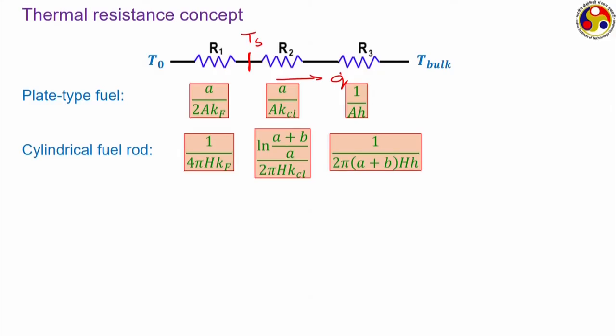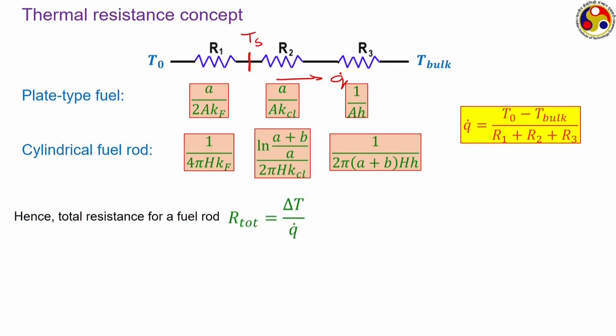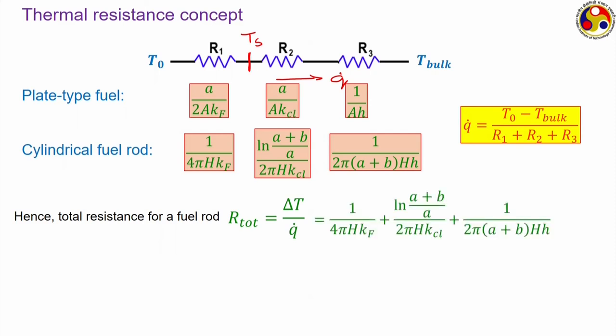Finally, we have the convective resistance associated with heat transfer from the cladding outer surface to the bulk of the fluid, which as expected is inversely proportional to the convective heat transfer coefficient. For any element we can write that the rate of heat transfer equals the effective temperature difference (T_0 minus T_bulk) divided by the corresponding resistance. For a fuel rod, the total resistance is the sum of three components: conductive resistance of the fuel, conductive resistance of the cladding, and the convective film resistance.